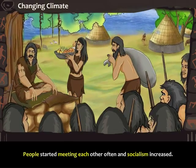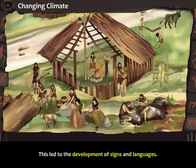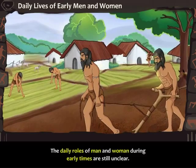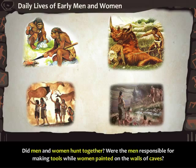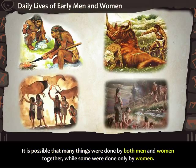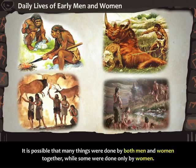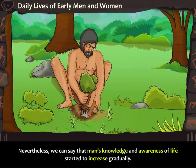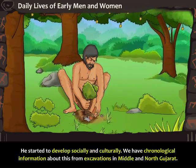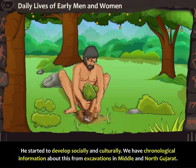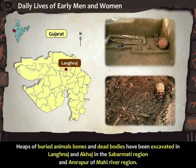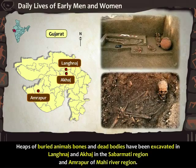People started meeting each other often and socialism increased, leading to the development of science and languages. The daily roles of man and woman during early times are still unclear — did men and women hunt together, were men responsible for making tools while women painted on the walls of caves? We can say that man's knowledge and awareness of life started to increase gradually, developing socially and culturally. Chronological information about this comes from excavations in Middle and North Gujarat, including heaps of buried animal bones and dead bodies excavated in Langanaj and Akhaj in the Sabarmati region and Amrapur of the Mahir River region.